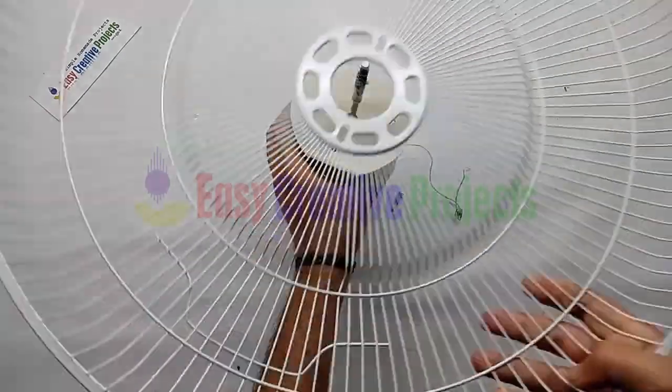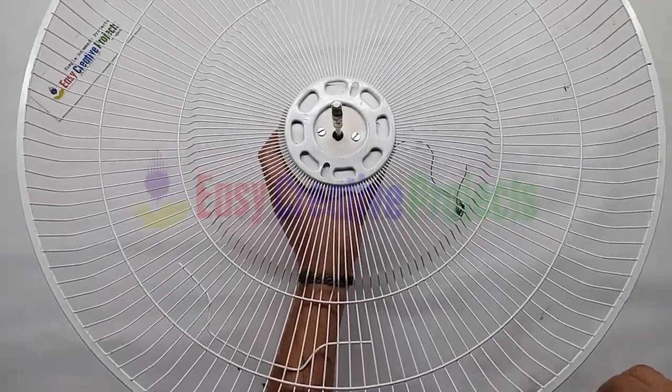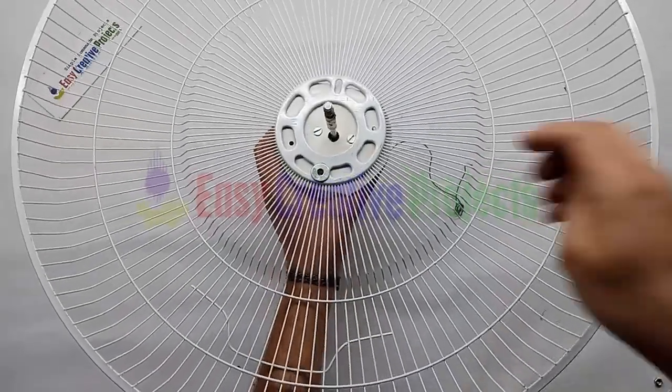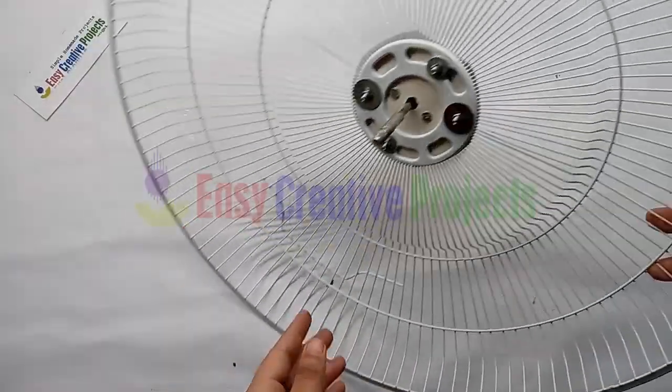Now take the back side of jolly and adjust motor with the help of screw like this.